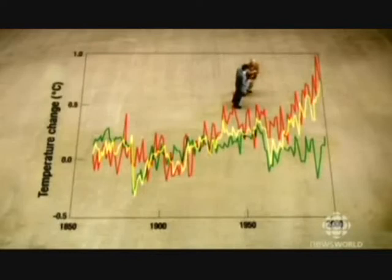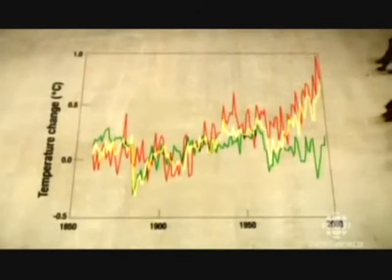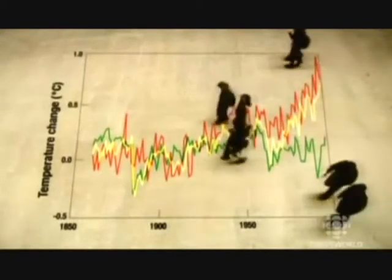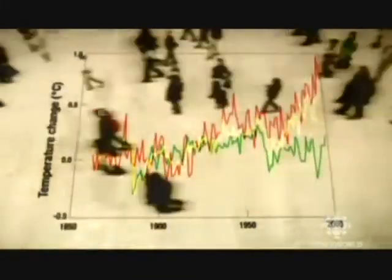And that tells us two things. One is that the model looks realistic — it looks like the real world. And the second thing the model tells us is that this recent warming is due to human beings. So there you have it. There seems little doubt that this recent, steep rise in temperature is due to human activity. If you look at the green line of natural variability, it's clear that without the action of human beings, there would have been far less temperature change since the 1970s.